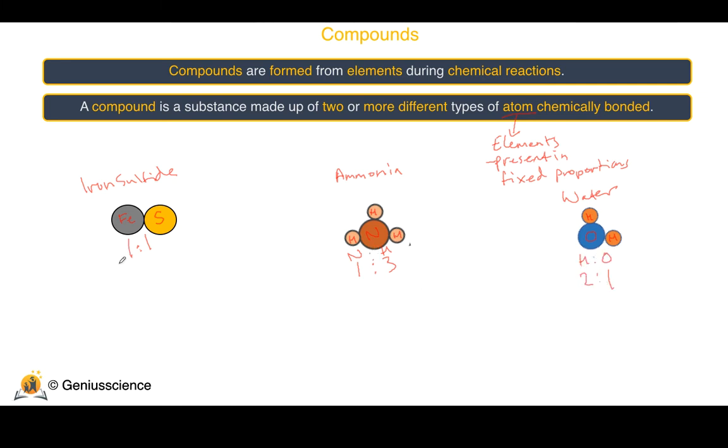As for the chemical formulae of these compounds, iron sulphide has the chemical formula FeS. Because there is one iron and one sulphur atom. Ammonia, NH3, one nitrogen and three hydrogen atoms.